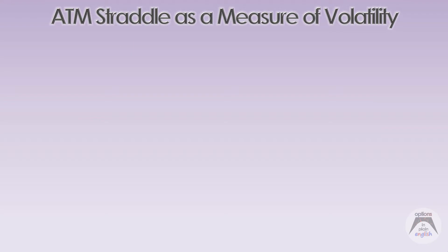Hello and welcome to Options in Plain English, Advanced Edition. Today we're going to be talking about the at-the-money straddle as a measure of volatility. The short straddle is a very common premium-selling strategy for option traders. It is made up of a short call and a short put at the same strike for the same expiration. In this lesson we will focus on one particular type of straddle: the at-the-money straddle. We will derive a simple formula to estimate it even without access to a trading platform, and then analyze its special properties and potential applications.